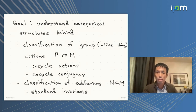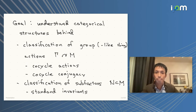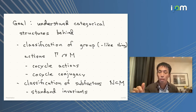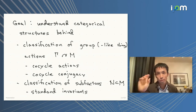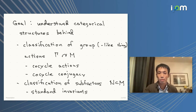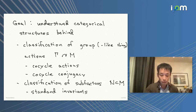We have to take cocycle conjugacies into account when trying to classify such actions. These are all formulated in a very concrete way, but they might look a bit out of the blue, and it may be difficult to see the conceptual reasons why you have to do this. Hopefully this categorical viewpoint will give you that.